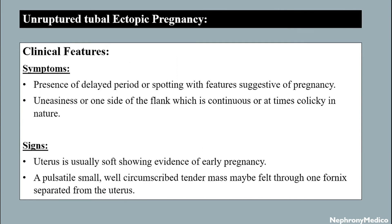Unruptured tubal atrophic pregnancy clinical features: symptoms include presence of delayed period with features suggestive of pregnancy, uneasiness on one side of the flank which is continuous or at times colicky in nature. Signs include a uterus usually soft and slightly enlarged as in early pregnancy, and a pulsatile small, well-circumscribed, tender mass may be felt through one fornix, separated from the uterus.